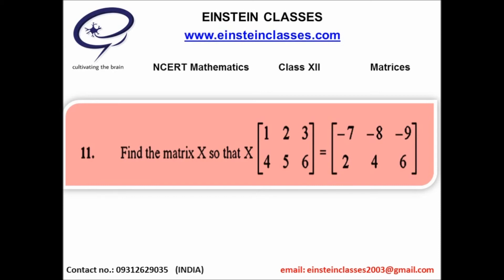Since the resulting matrix has order 2×3, m must equal 2. Therefore, X is a square matrix of order 2×2. Assume X has entries [[a,c],[b,d]]. Multiply X by the given matrix, use the concept of equality of two matrices to get equations, then solve for a, b, c, and d.